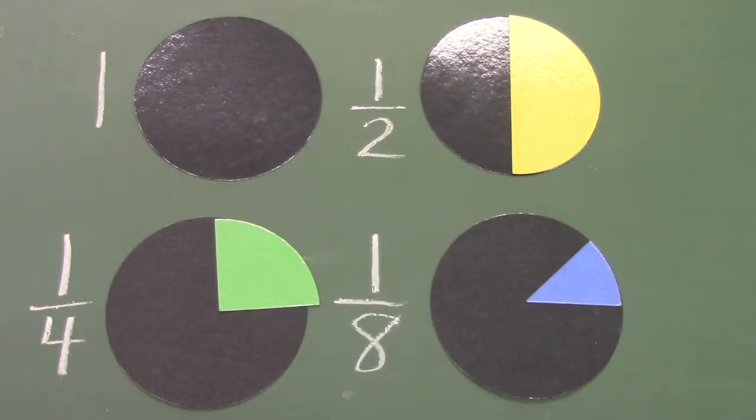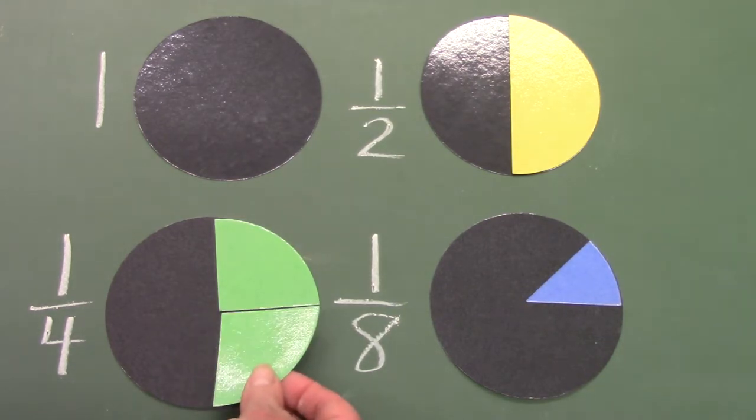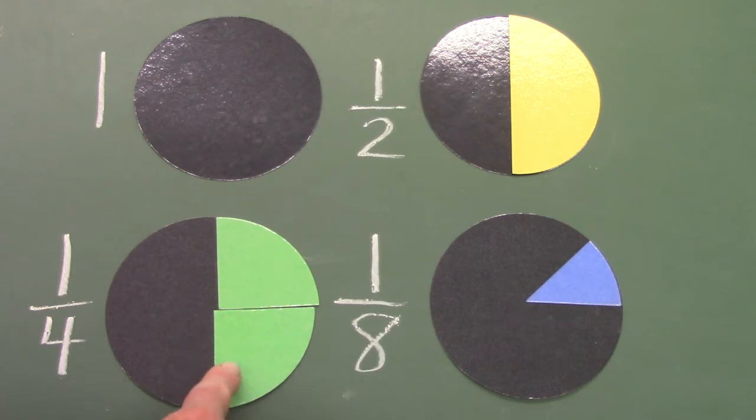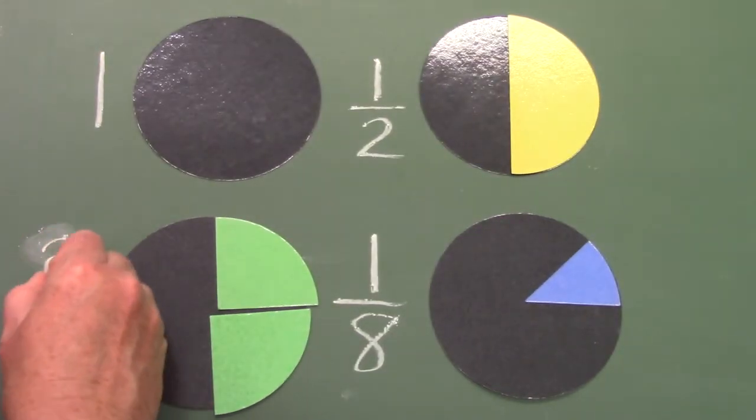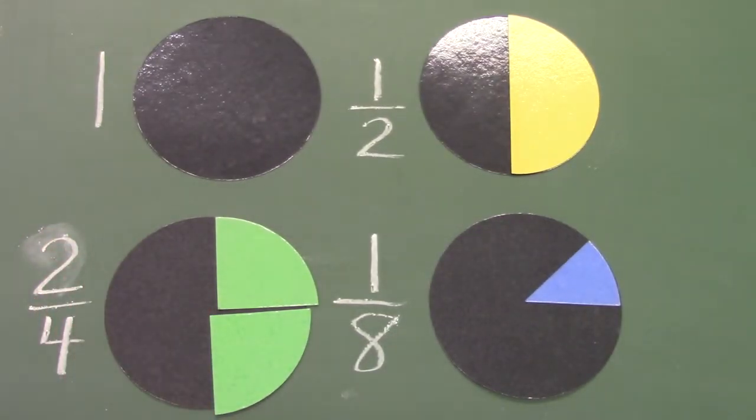But sometimes we have more than one piece. In like a pizza or an apple, we might have more than one piece. So here now I've put two out of the four pieces. So I'm going to erase my one and I'm going to write down two out of the four or two-fourths.